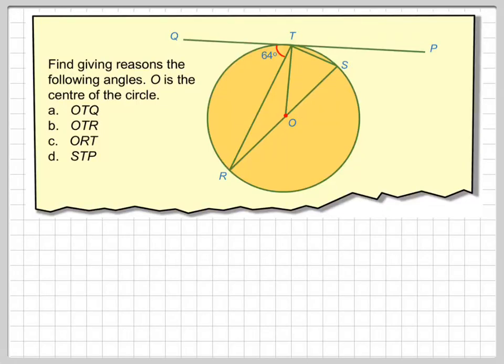Right, welcome to the second video on the alternate segment theorem. It says find giving reasons the following angles. O is the centre of the circle. That's quite important for this question.